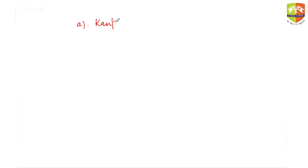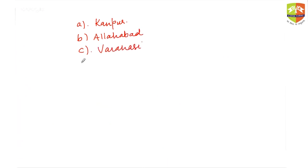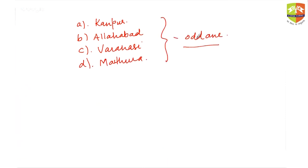Now: find the odd one out among these city names — Kanpur, Allahabad, Varanasi, and Mathura. Don't categorize on the basis of religious or non-religious. You cannot categorize places that way — every city has temples, mosques, churches. All four are in UP and are very famous.